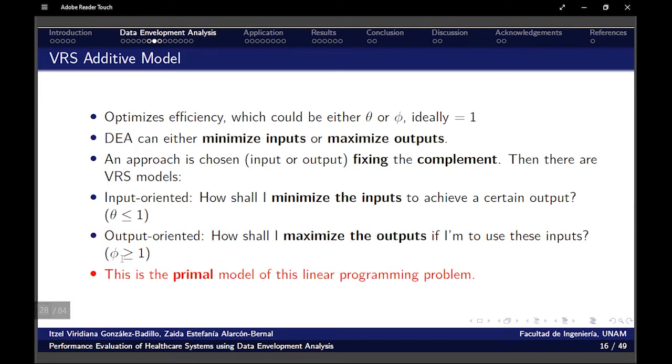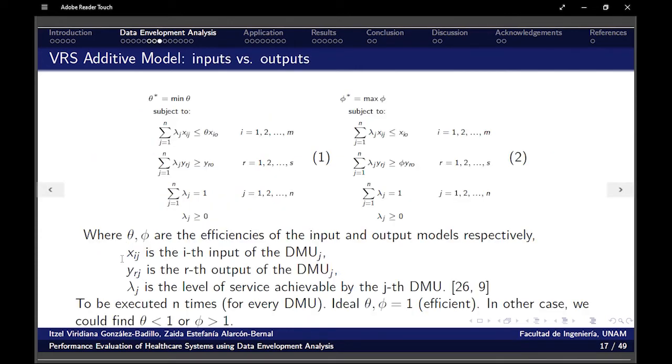So this is a primal model of this linear programming formulation. Here is the model. On the left, we have the input-oriented. On the right, the output-oriented. Here the thing is that in input we want to minimize and outputs we want to maximize. And here is something important that we're going to talk about later. That is this lambda value that is going to be the level of service achievable by a certain DMU. This model has to be executed n times so I can step on a specific DMU. So I can sweep each and every of them and I can compare the values obtained.